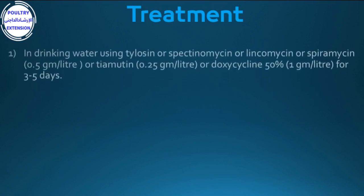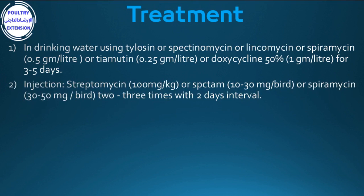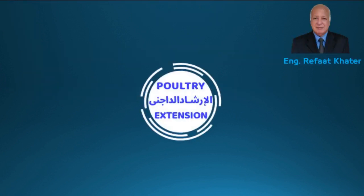Treatment: (1) In drinking water, using tylosin, spectinomycin, lincomycin, or spiramycin at 0.5 g per liter water, or tiamulin at 0.25 g per liter water, or doxycycline 50% at 1 g per liter water for 3 to 5 days. (2) Injection: streptomycin at 100 mg per kg live weight, or spectinomycin at 10–30 mg per bird, or spiramycin at 30–50 mg per bird, two to three times with one-day intervals.